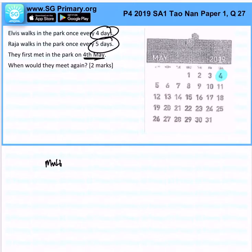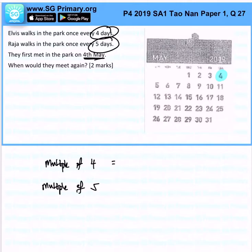So immediately, we want to find out what is the common multiple of 4 and 5.